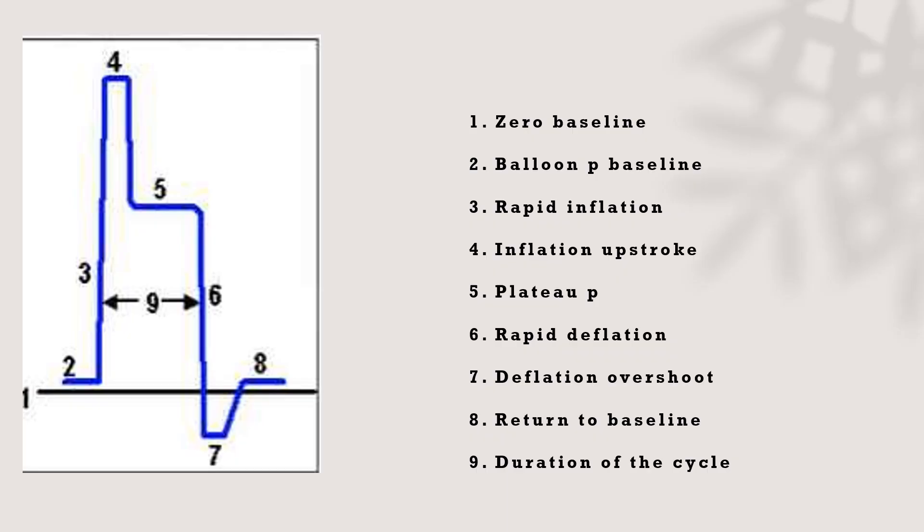It's very important to know how to interpret the balloon pressure waveform. One is zero baseline and two is the balloon pressure baseline. When we inflate the balloon with the helium, it will create phase number three. And when reaching up to full inflation, it will be inflation upstroke. And five will be like the plateau, balloon plateau pressure, or we consider it a seated chair. The balloon plateau pressure is a function of the pressure inside the helium of the balloon and the pressure inside the aorta, which relates to elastic recoil of the aortic wall. And six is rapid deflation, and seven is a deflation overshoot, about 10 to 15 millimeters mercury, and eight is returning to the baseline.